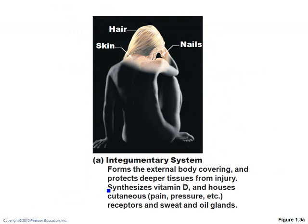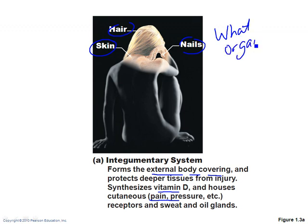Let's talk about some of those organ systems. The first is the integumentary system — basically your external body covering. It protects your deep tissues from injury. It also has a metabolic function: it makes vitamin D. It also houses receptors for pain, pressure, and hot and cold, and has sweat glands and oil glands. The components are hair, skin, and nails. You want to know what organs are involved and their function — basically protection, some metabolic functions, and some sensory functions.